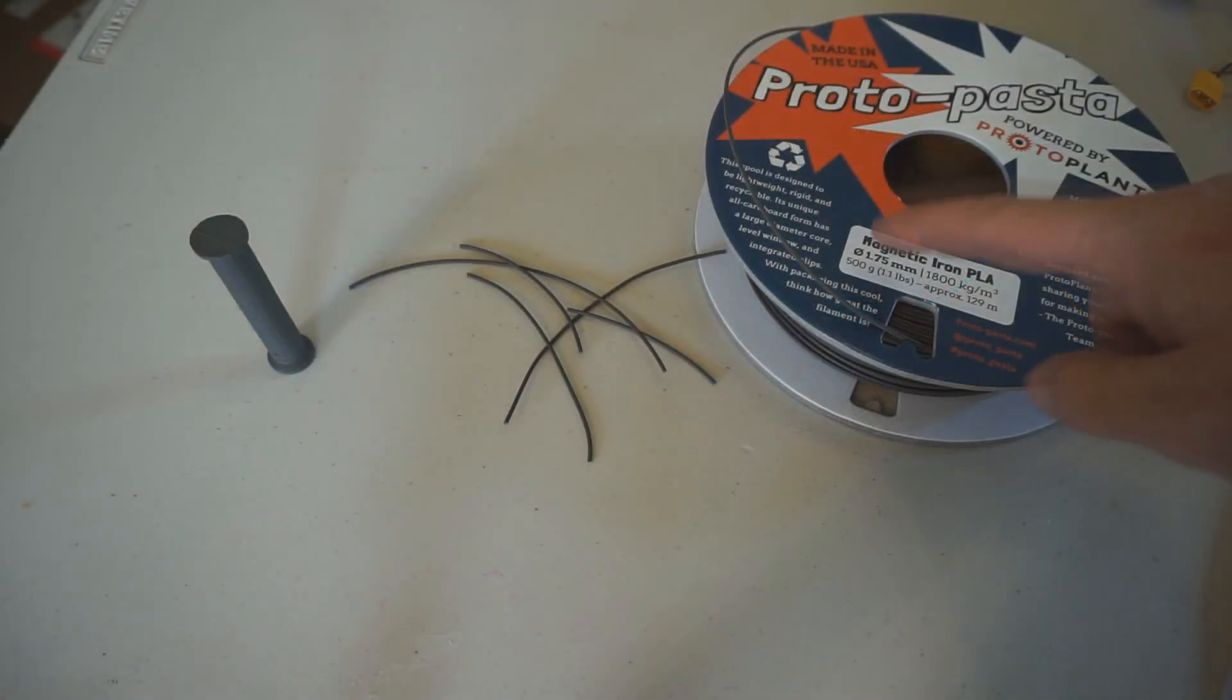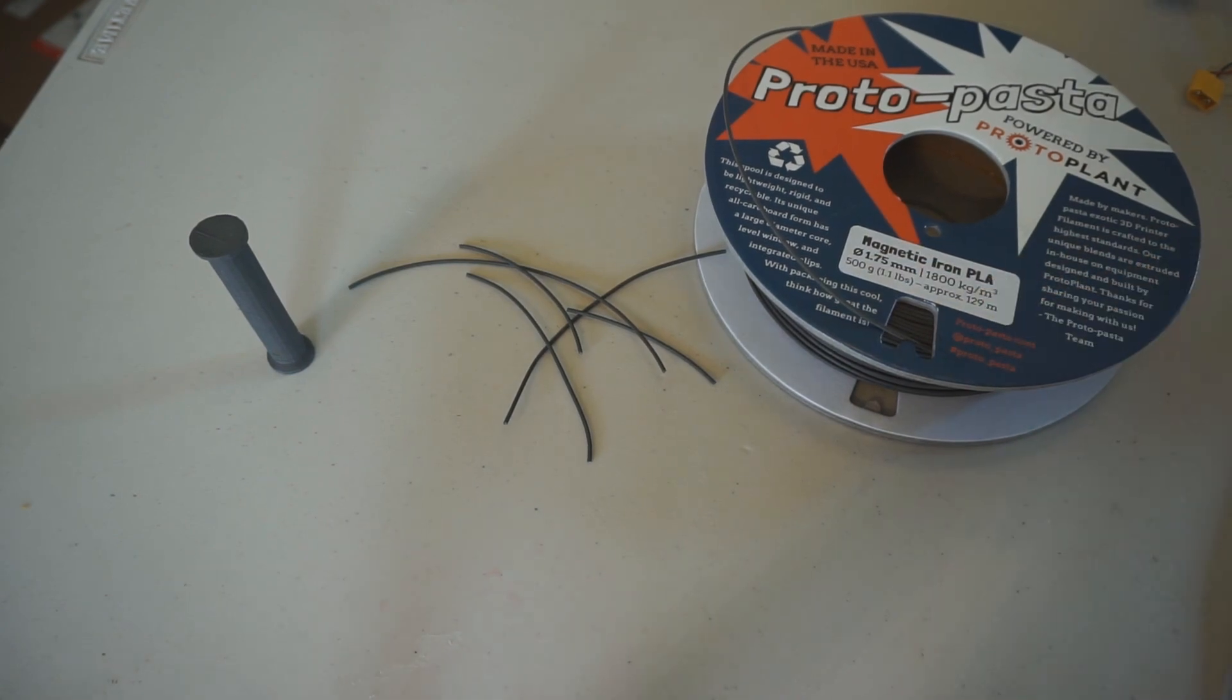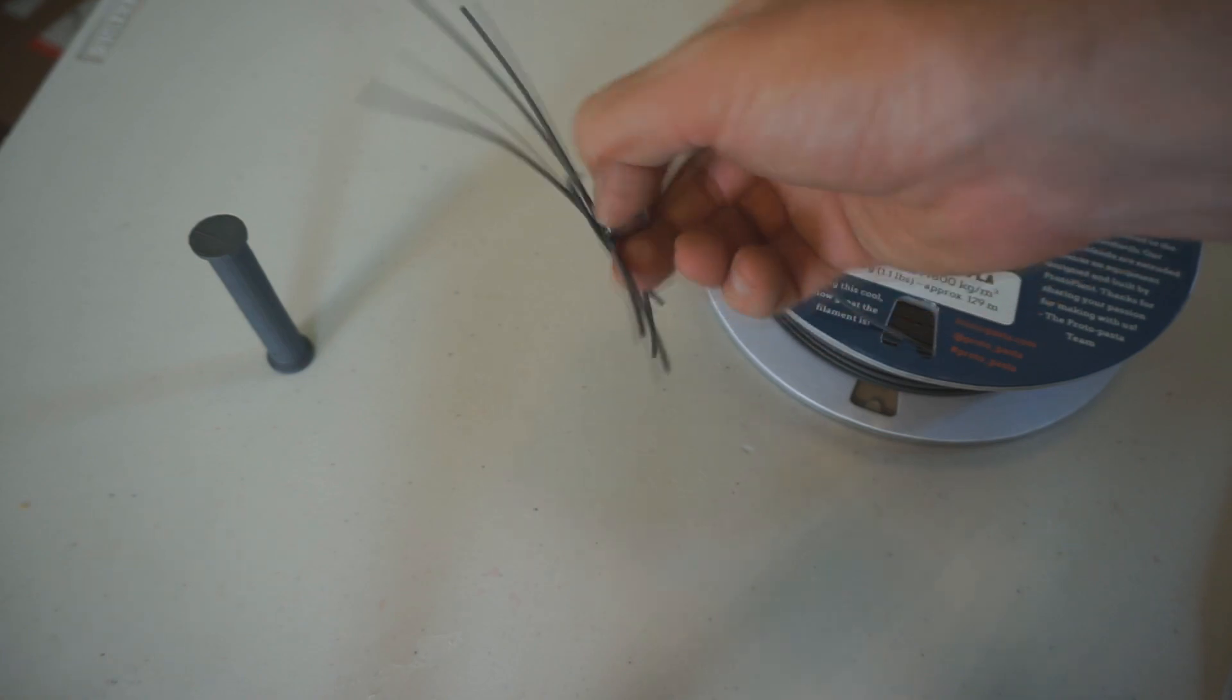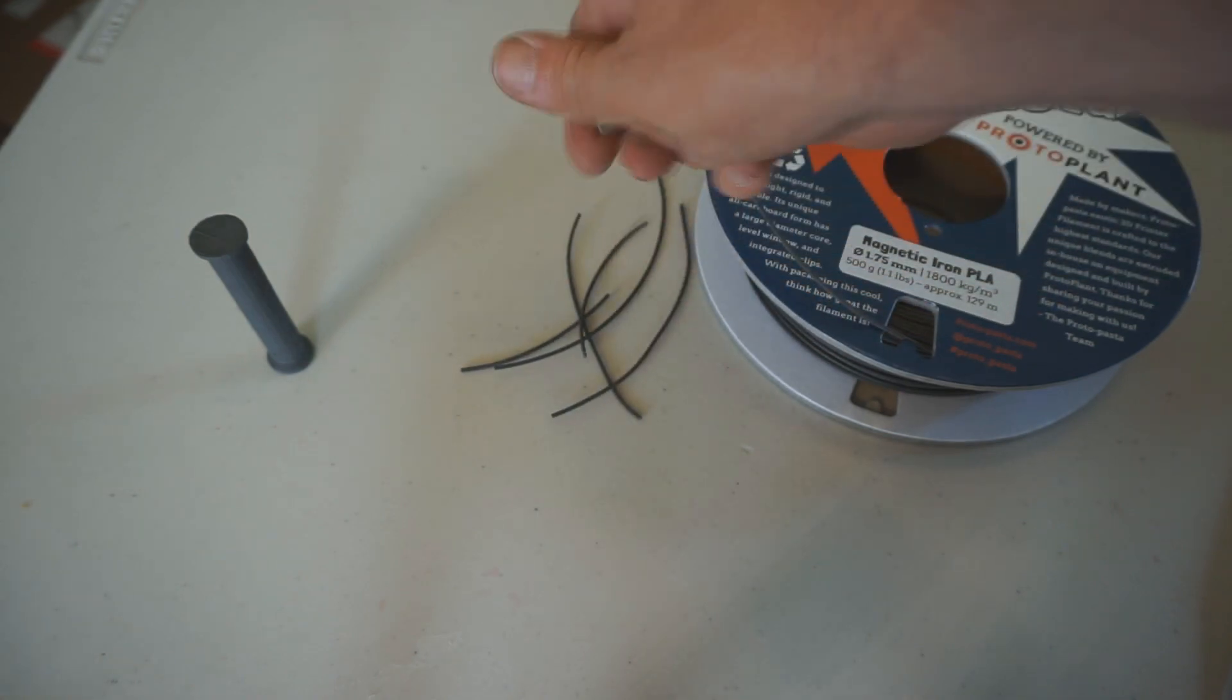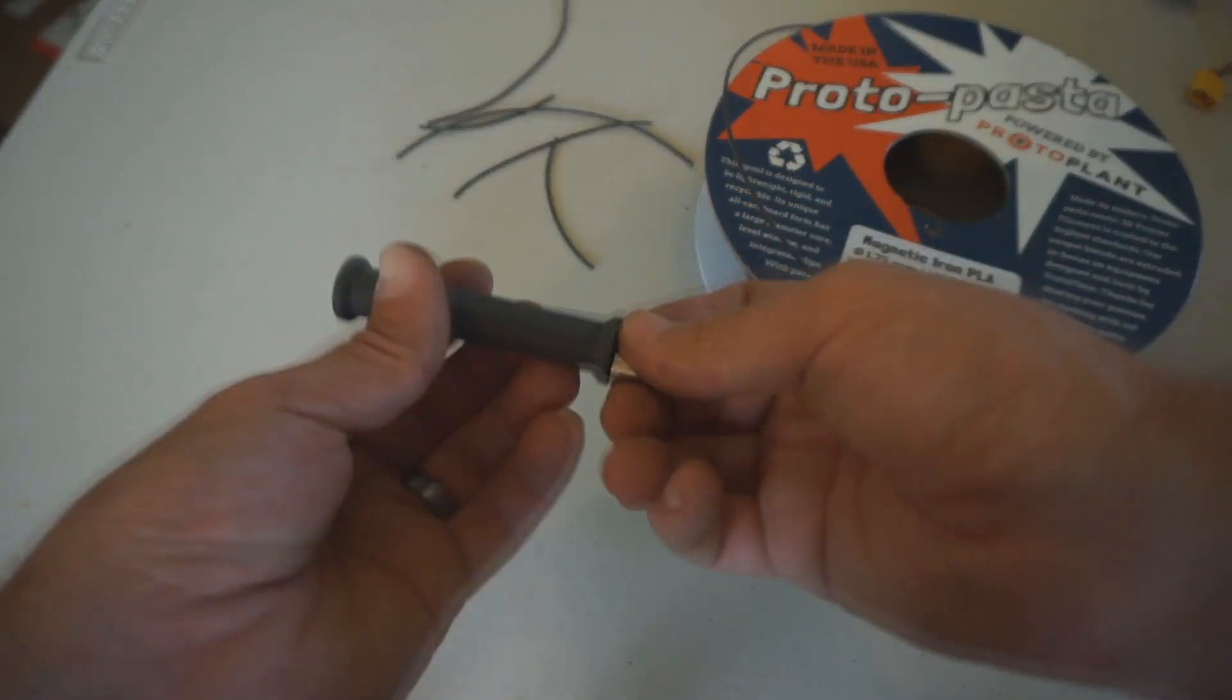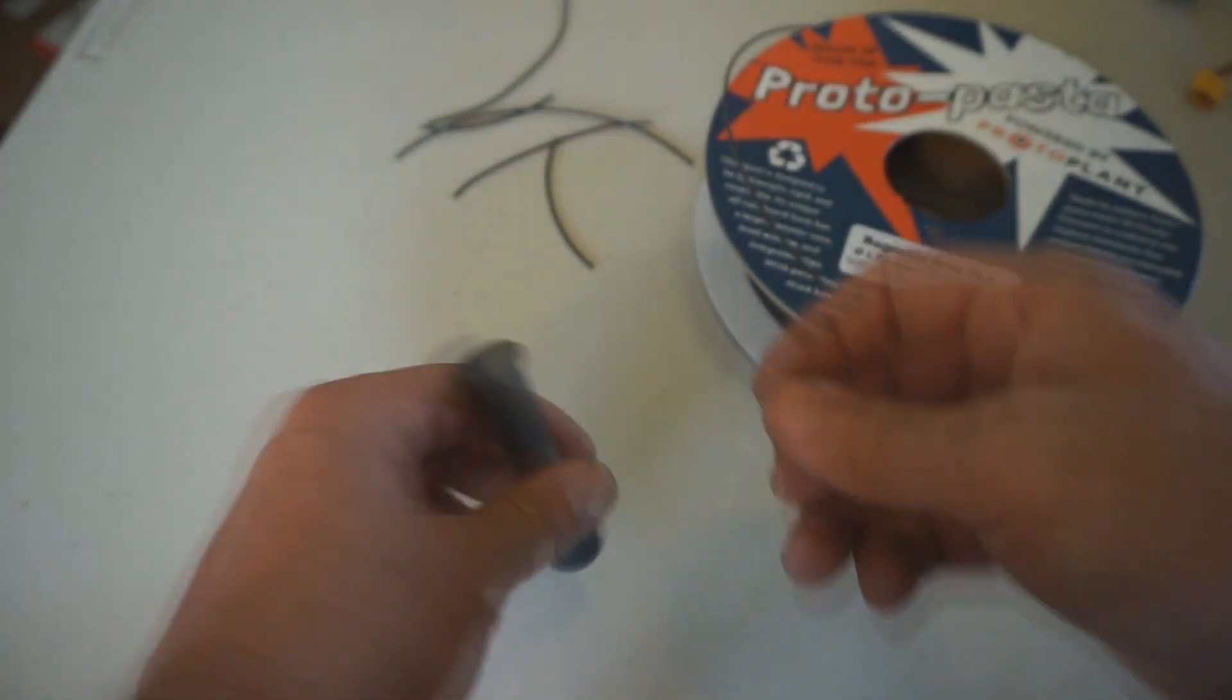Okay, this is magnetic iron PLA, and this is some really interesting material. You can see here that it's quite magnetic - you can pick this stuff up with a magnet. It's supposed to rust over time, so it has some very interesting properties. You can see here I printed a core for an electromagnet - we'll test that out.